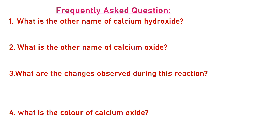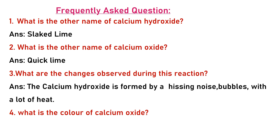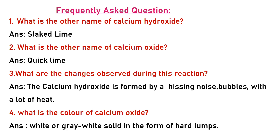Frequently asked questions: First — what is the other name of calcium hydroxide? Slaked lime. Second — what is the other name of calcium oxide? Quick lime. Third — what changes are observed during this reaction? Calcium hydroxide is formed with hissing noise, bubble formation, and a lot of heat. Fourth — what is the color of calcium oxide? White or gray-white; it is a solid substance in the form of hard lumps.